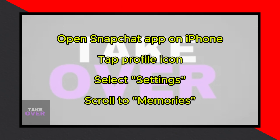First, open the Snapchat app on your iPhone and tap on your profile icon at the top left corner. Then, select Settings from the top right menu.